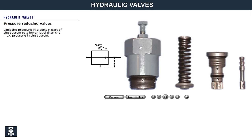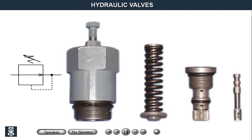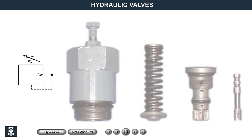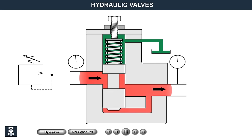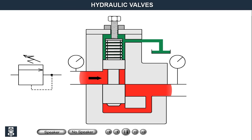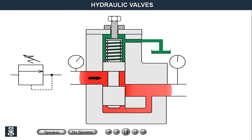Pressure reducing valves limit the pressure in a certain part of the system to a lower level than the maximum pressure in the system. As a rule they also maintain maximum pressure in the subsystem at a constant value regardless of pressure changes in the main circuit. When the fluid pressure in the branching line has reached the set value, the oil pressure in the channel lifts the valve slide and the slide closes between inlet and outlet. The spring housing is connected to tank to prevent hydraulic lock.